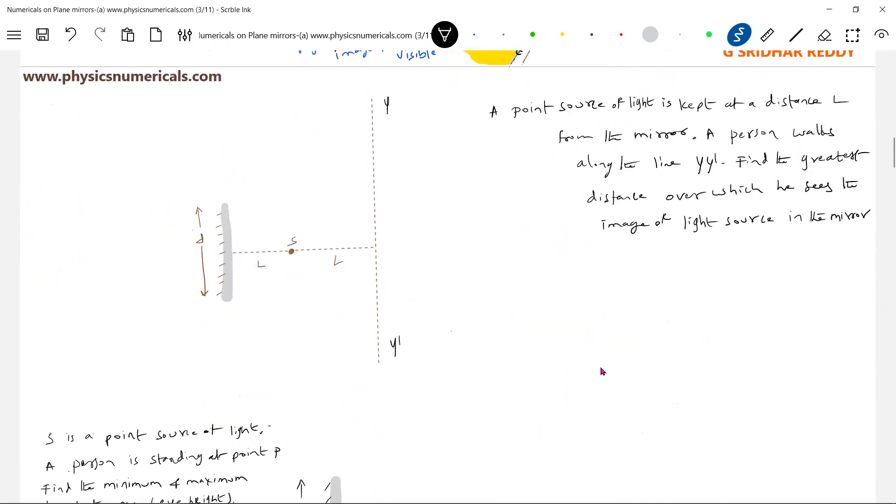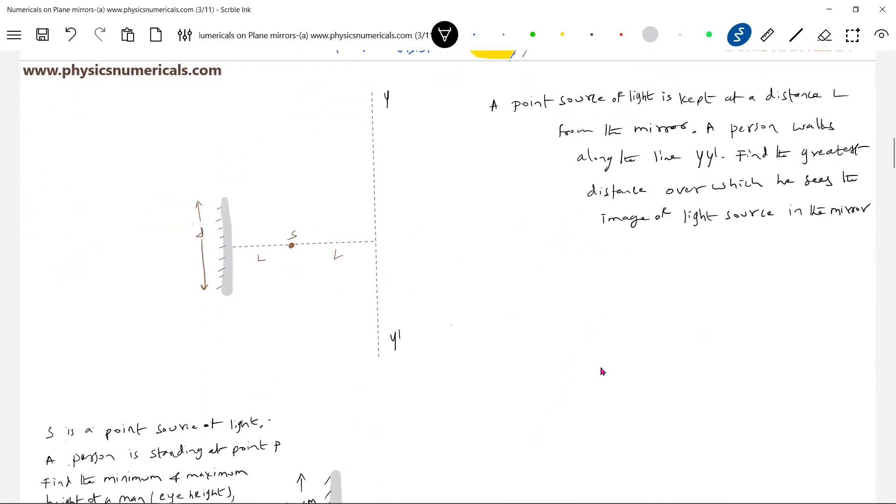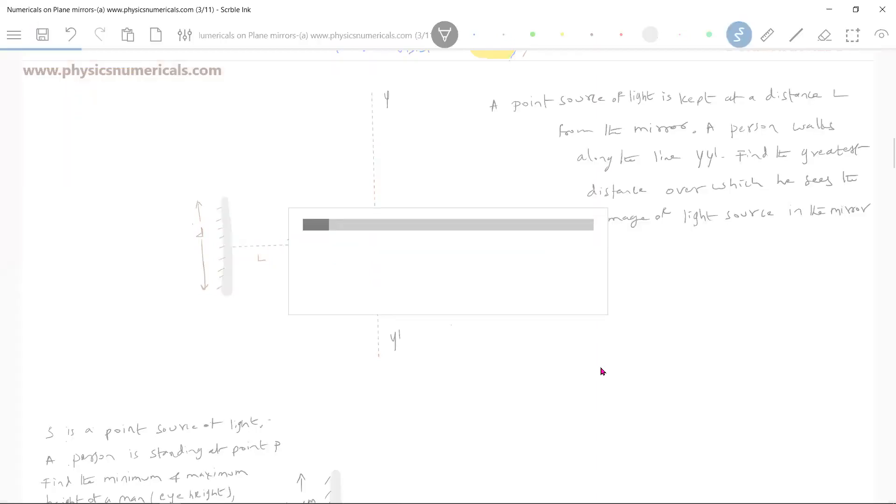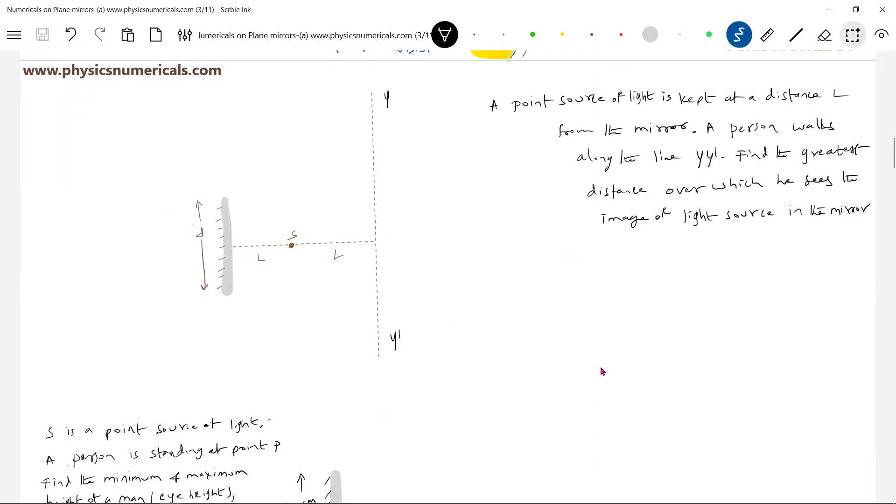Okay, we'll take the next problem. Let me read the question. A point source of light is kept at a distant L from the plane mirror of length D. A person walks along the line YY'. Find the greatest distance over which you see the image of light source in the mirror. So what is the length of the mirror? Length of the mirror equal to D.